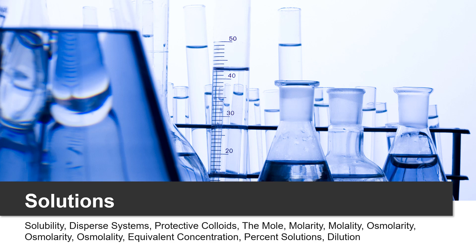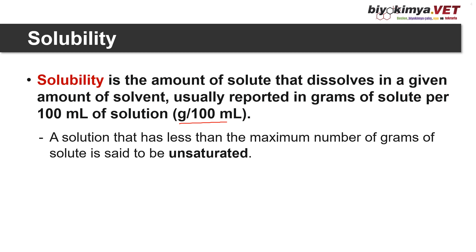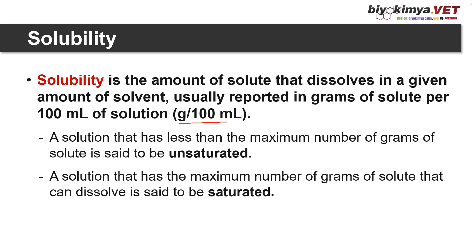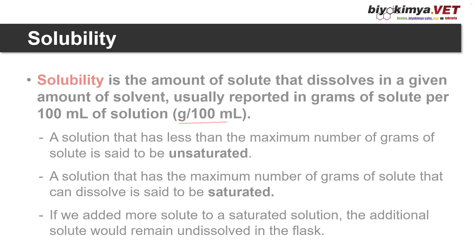Let's start with solutions — solubility or solvation. Solubility is the amount of solute that dissolves in a given amount of solvent, usually reported in grams of solute per 100 ml of solvent. The measurement unit is gram per 100 ml or gram per deciliter. A solution with less than the maximum amount of solute is unsaturated. A solution with the maximum amount is saturated. If we add more solute to a saturated solution, the additional solute remains undissolved.